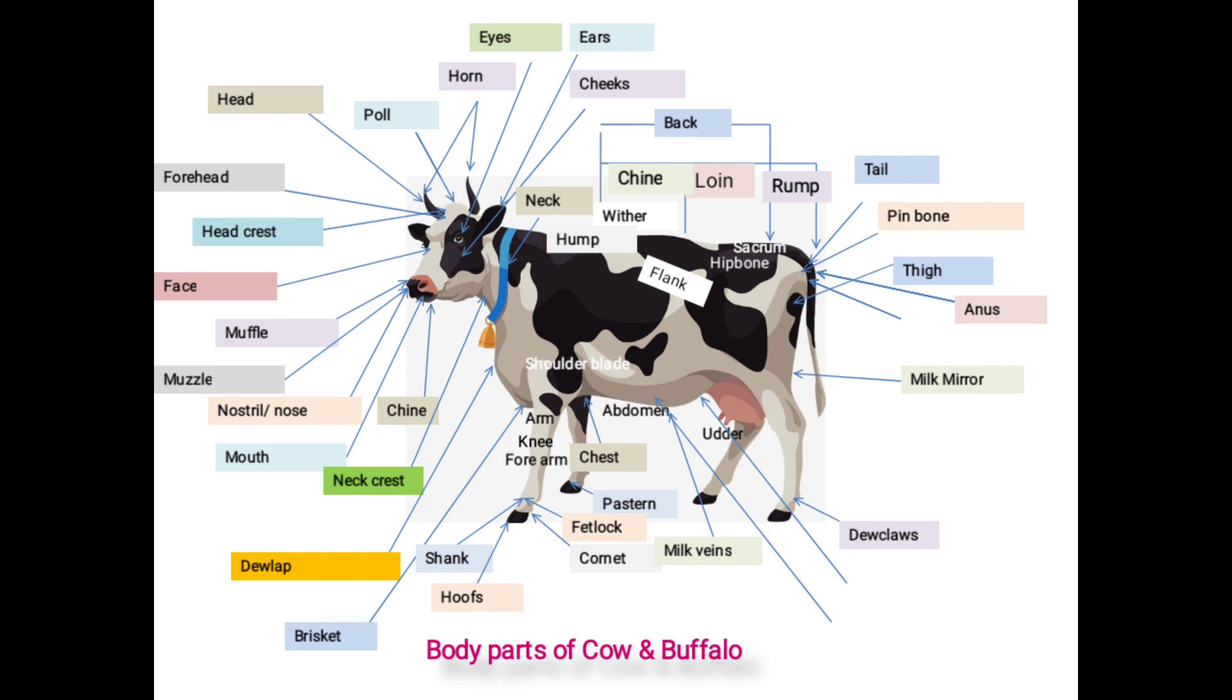The next one is vulva: outermost portion of female genital organ, triangular in shape and situated below the anus called as vulva. It has an opening with two vulva lips and it is common passage for urination and mating purpose.